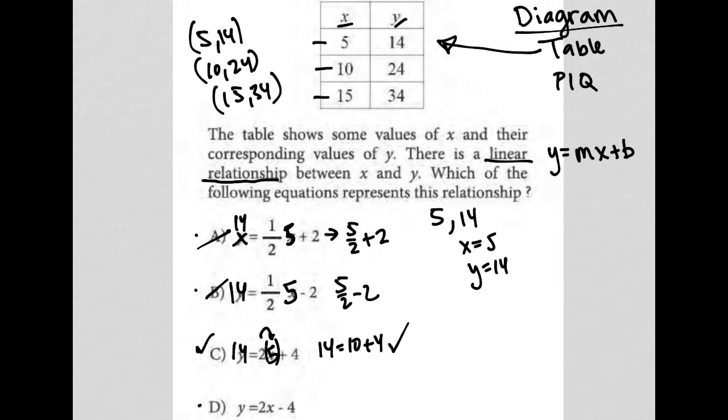I'm going to try choice D just to make sure. So replace Y with 14, replace X with 5. In that case, I get 2 times 5, which is 10. And then I'd have, does 14 equal 10 minus 4? And that is not the case. So my correct answer here is choice C.